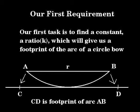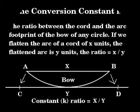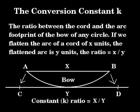Our first task is to find a constant ratio k which will give us a footprint of the arc of a circle bow. In other words, we need to flatten the arc AB of the bow into a chord to get a corresponding value. Let us make it clear what we mean by a footprint. The conversion constant k is the ratio between the chord and the arc footprint of the bow of any circle. If we flatten the arc of a chord that is x units, then the length of the flattened arc will be y units. The ratio k is then x over y.